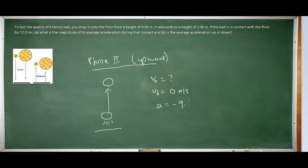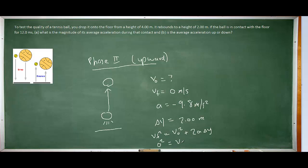The acceleration is still negative 9.8 meters per second squared. The height that the tennis ball travels on its way upward is positive two meters, since the ball is moving upward relative to where it started. We'll use the equations of kinematics again — the same equation as before: v² = v₀² + 2aΔx. Plugging in the parameters, you should have calculated an initial velocity of 6.26 meters per second. That's the velocity with which the ball leaves the ground.